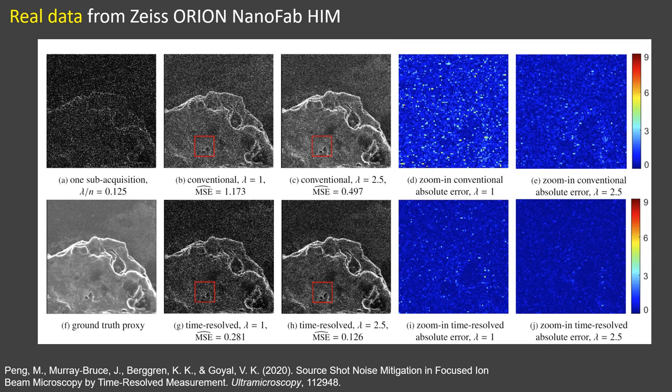We also compare the pixel-by-pixel absolute error of both methods for the zoomed areas shown in the red boxes. We still observe the improvement by applying time-resolved measurements.